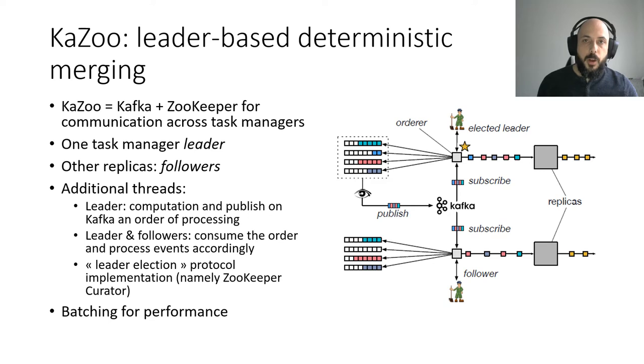A leader election algorithm based on Zookeeper is used to automatically elect a new leader in case of failure of the leader. As long as the leader is present, the order can be computed. This approach, however, needs the usage of additional modules, thus potentially increasing latency.